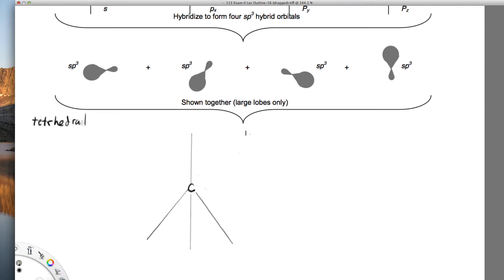Okay, so now I'm going to put my four SP3 orbitals that you see up here, and I'm only going to show that larger lobe coming out of the carbon. So, let's just try to make them as equal as possible.